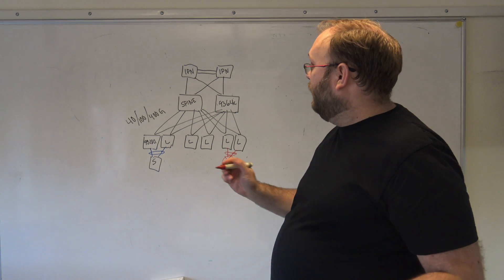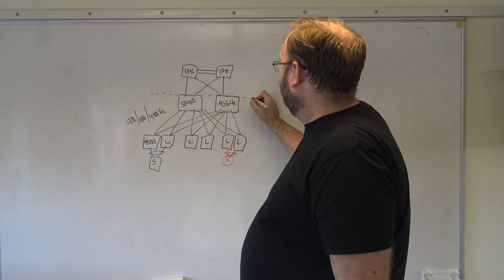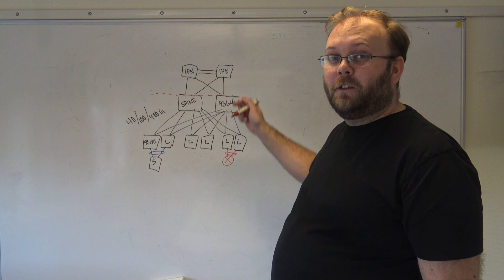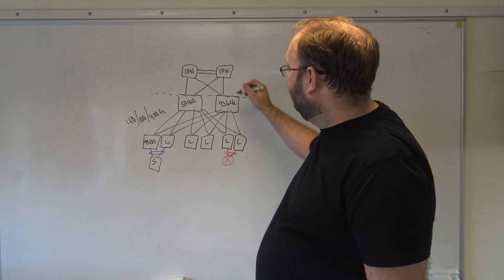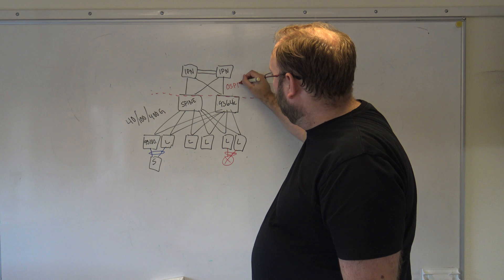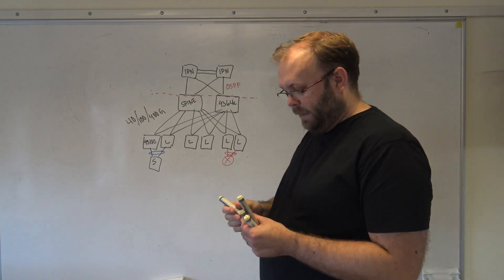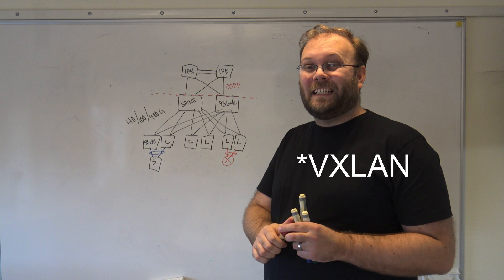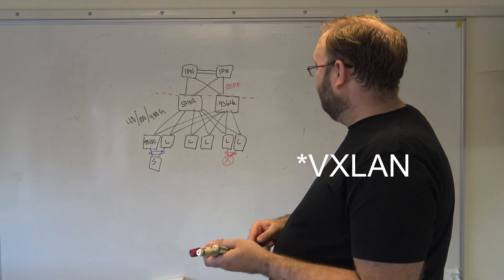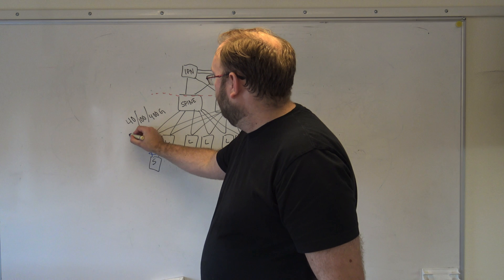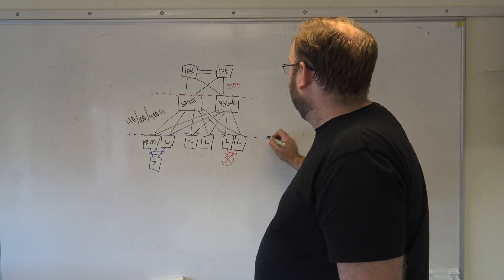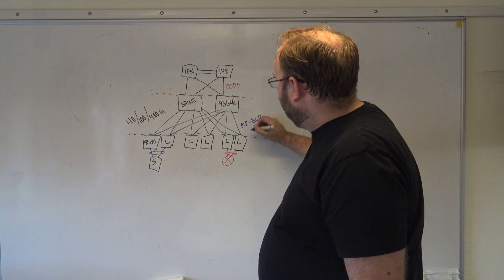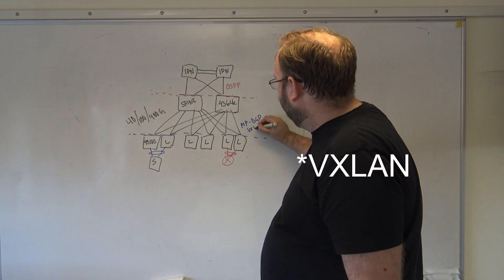So above here you're running routing, so here you're running for example OSPF. The fabric itself is running MPBGP with VXLAN. And important here is to have a high MTU.